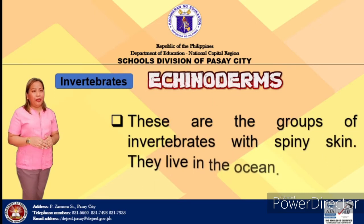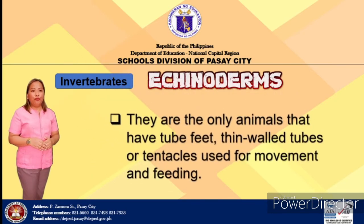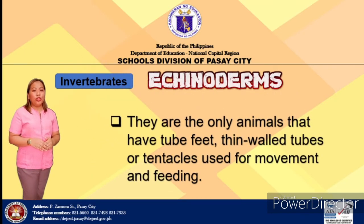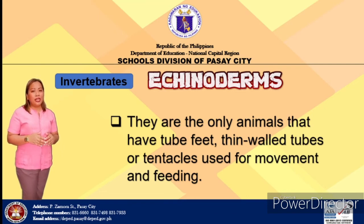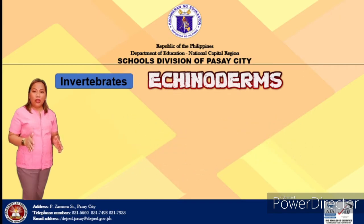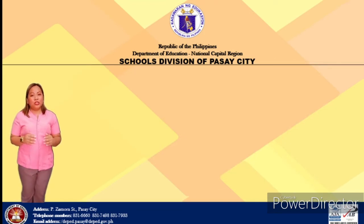Echinoderms are a group of invertebrates with spiny skin. They live in the ocean. Echinoderms do not have a head end or a tail end. They are the only animals that have tube feet — thin hollow tubes or tentacles used for movement and feeding. The bodies of echinoderms have an internal network of fluid-filled canals connected through a large body cavity. This makes feeding, moving, and sensing their environment easier. Examples are starfish, sea cucumber, and sea urchin.